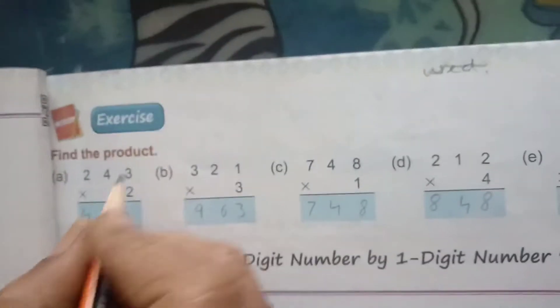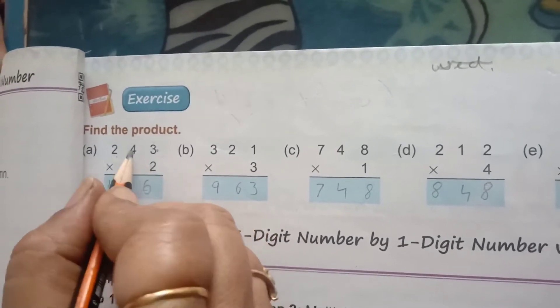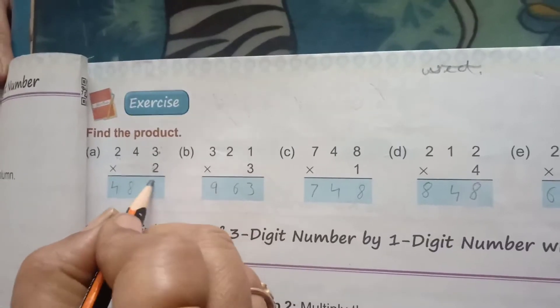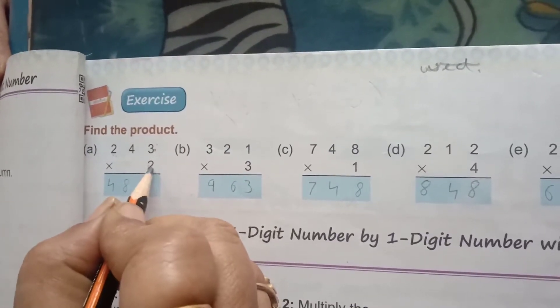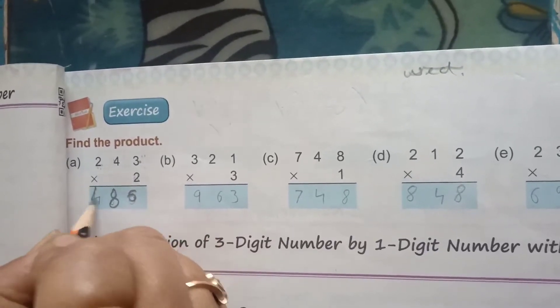243 into 2. We have to multiply first the 1's place, then 10's place, and then the 100's place. 2 threes are 6. 2 fours are 8. 2 twos are 4.